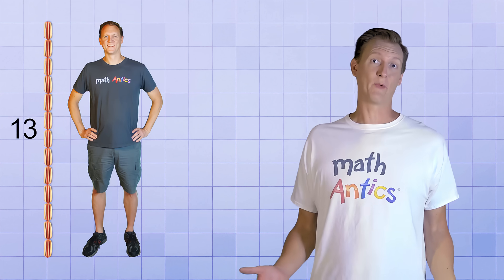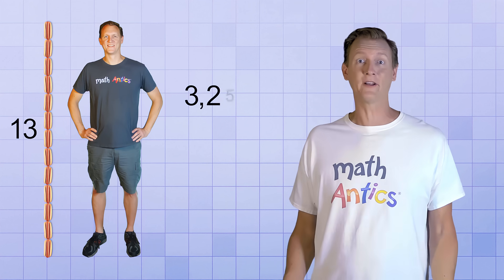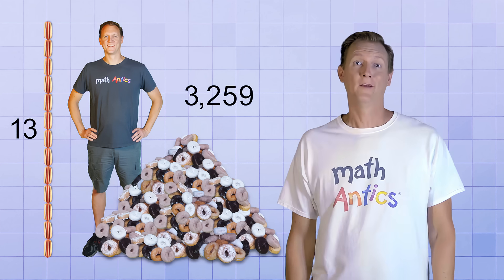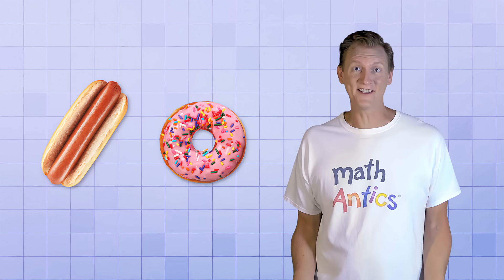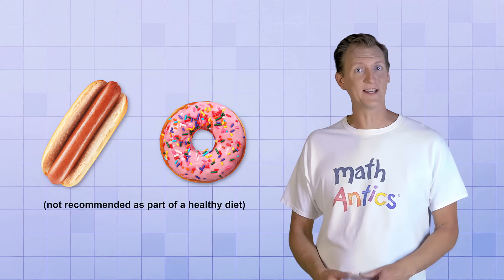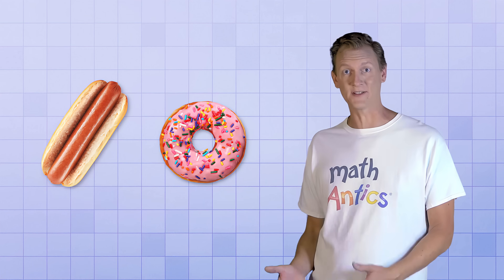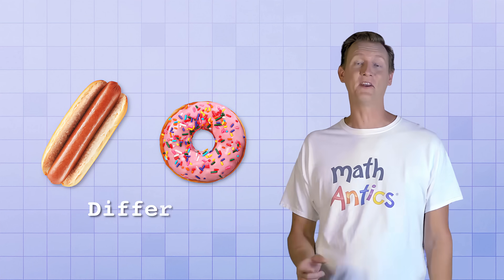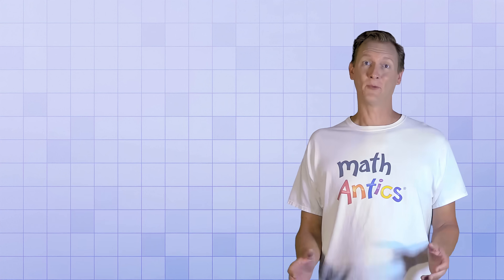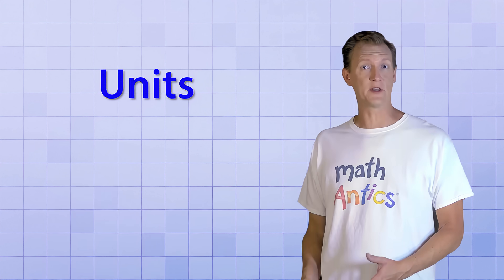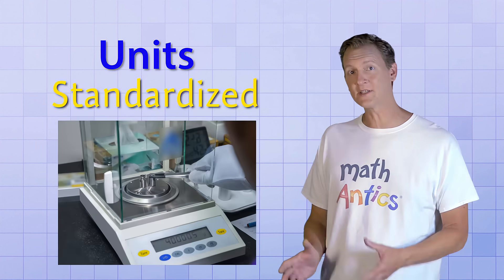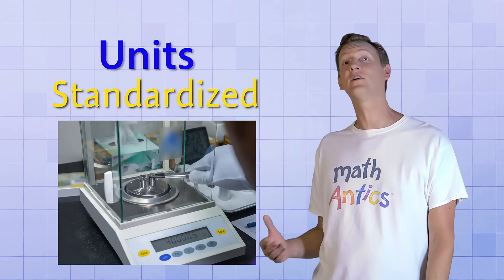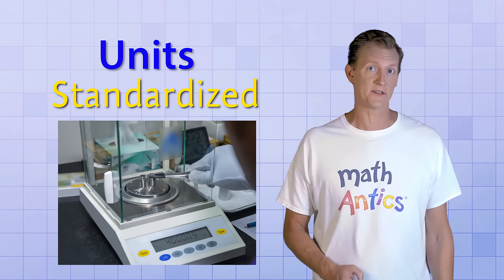I could tell you that I'm 13 hot dogs tall, and my weight is 3,259 donuts. The problem with those units is that hot dogs and donuts aren't very consistent, and unless you and I are using exactly the same hot dogs and donuts to measure, we'll probably come up with different results. To get around this problem, the units that we use in math and science are standardized, which means that they match official standard amounts that can be measured over and over again to give exactly the same result.